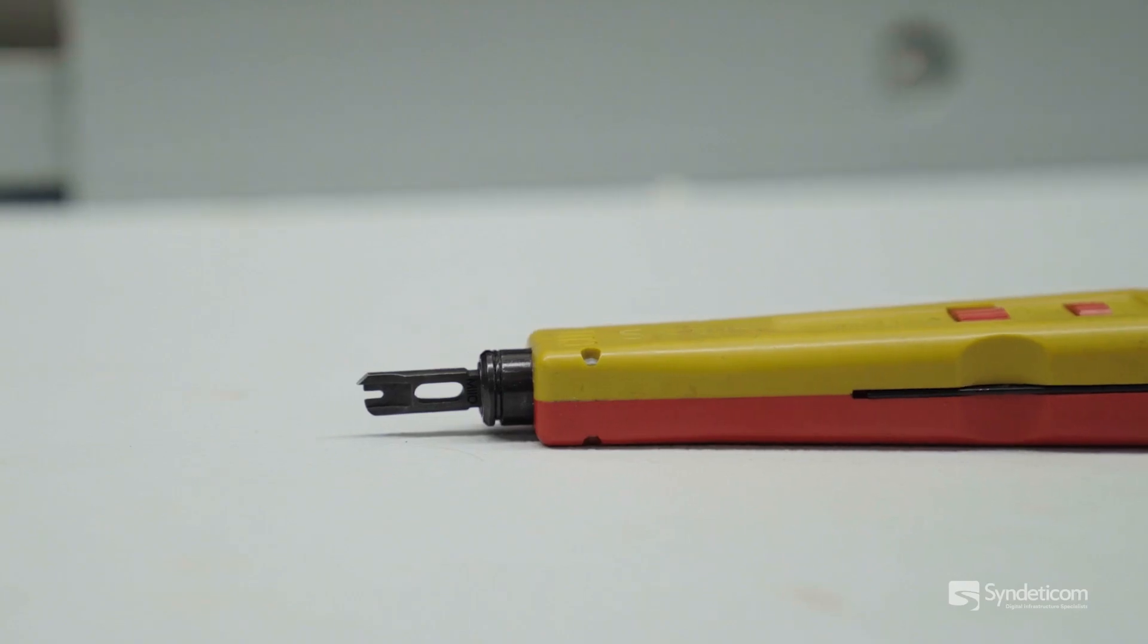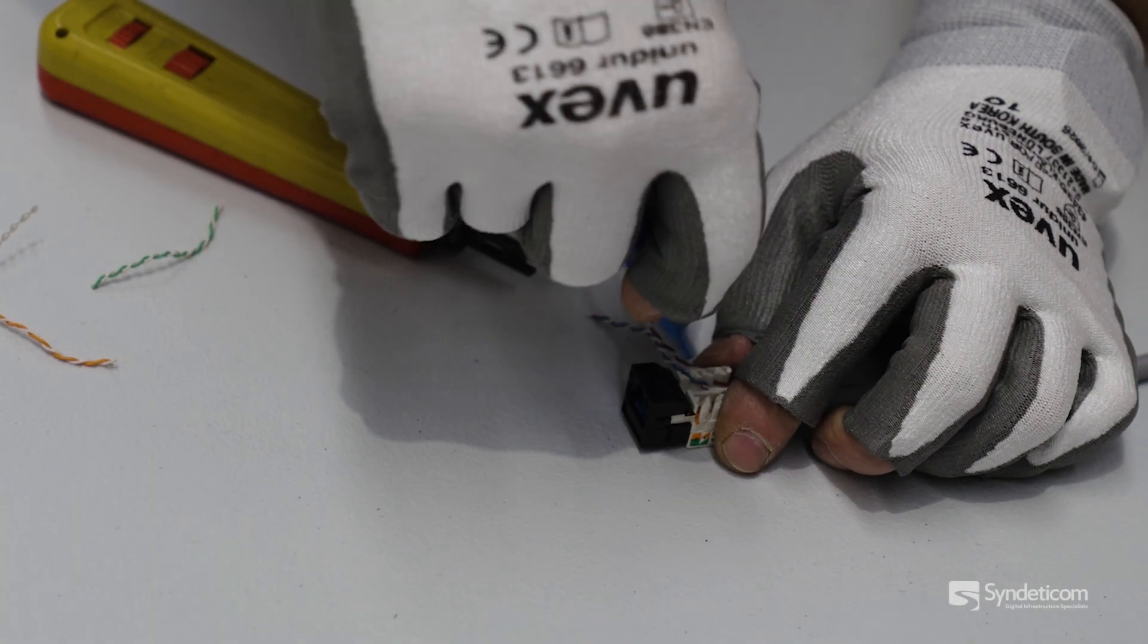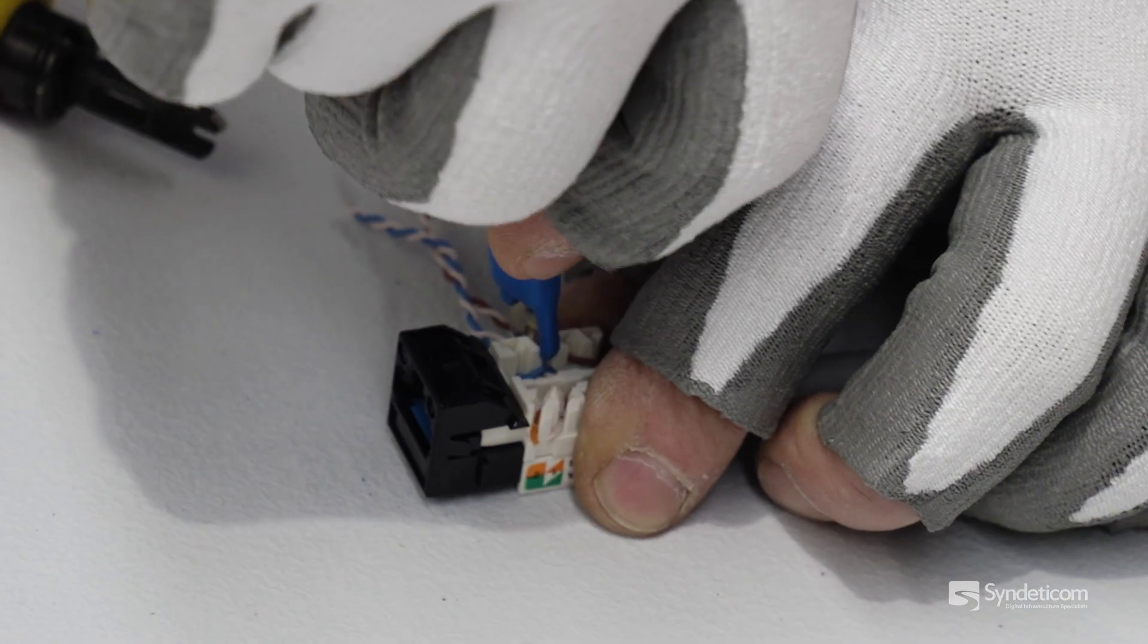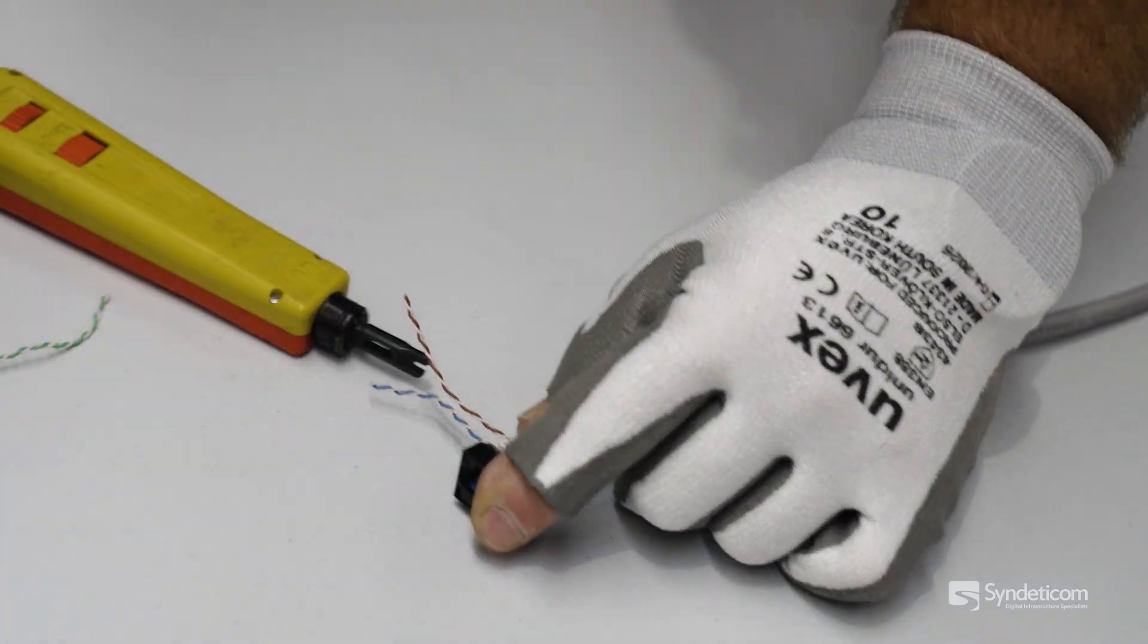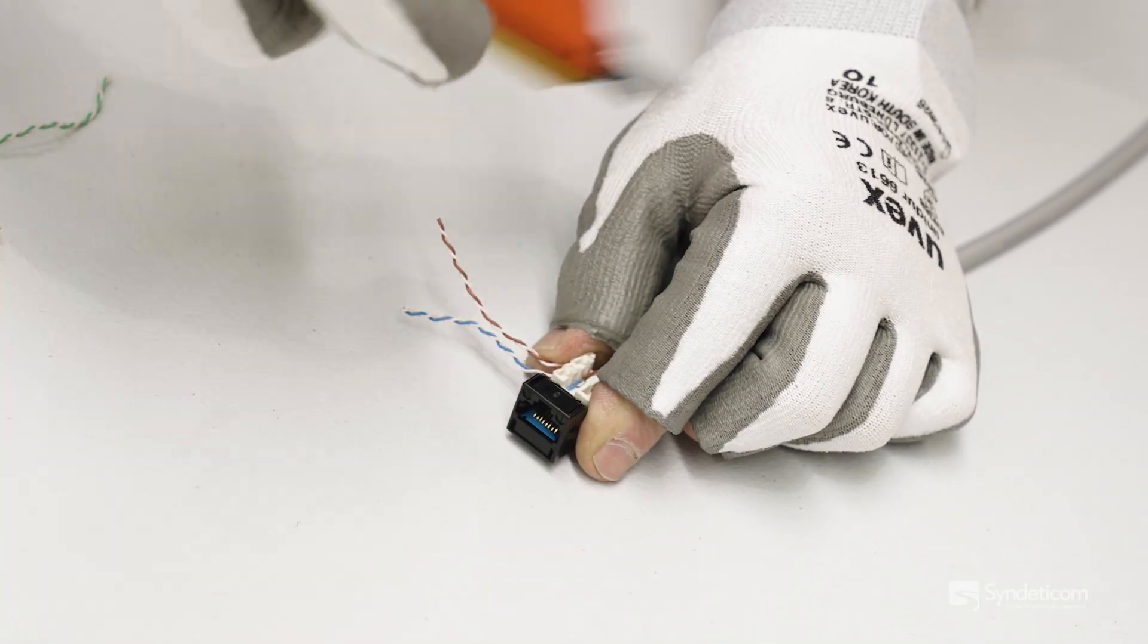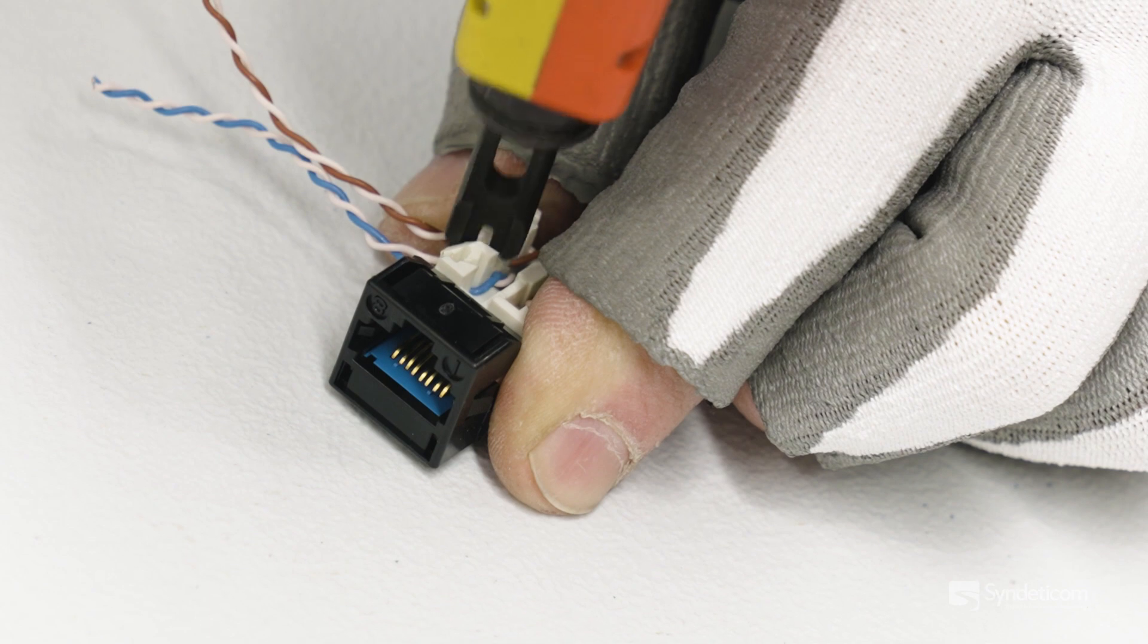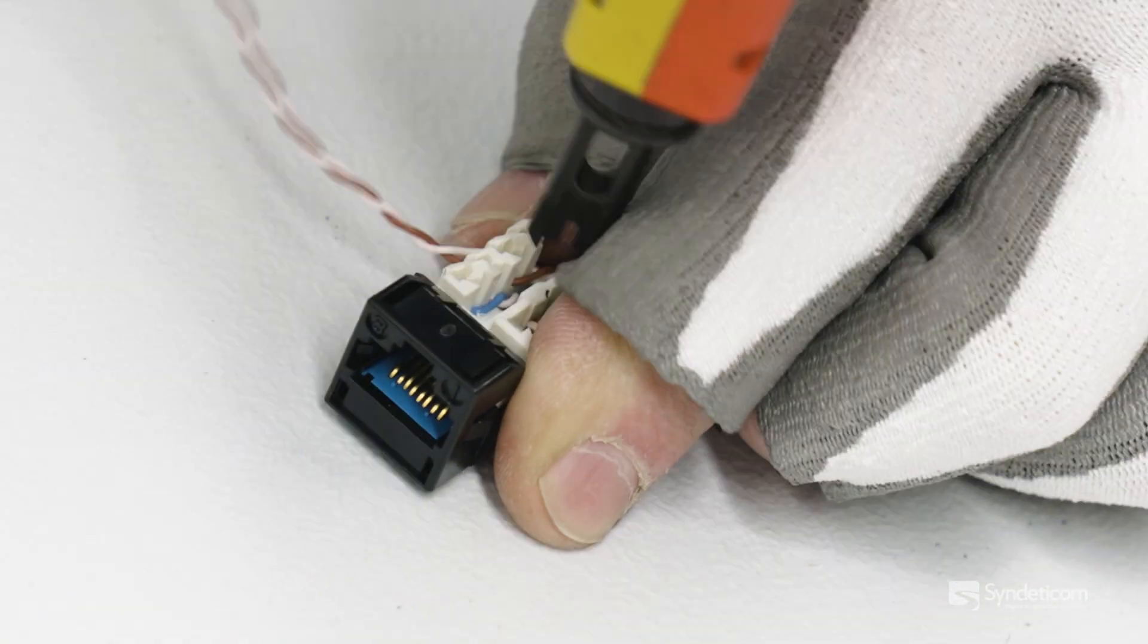The other way is you can use a 110 tool. I still prefer to seat these in first to make sure you've got a nice connection, and then the only difference is you'll use this keeping your blade to the outside. You'll just punch them in and you can cut them off like that.